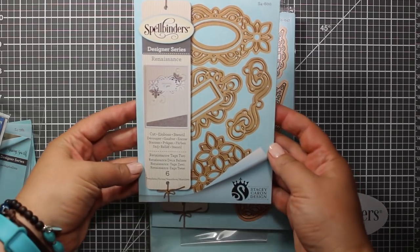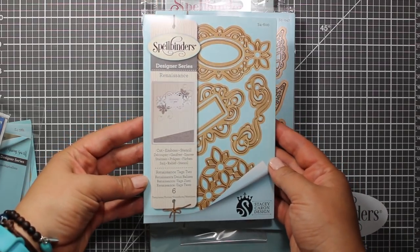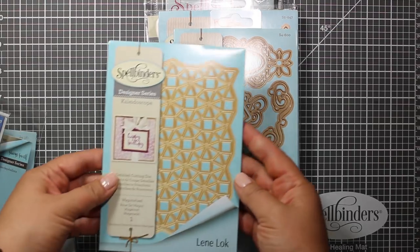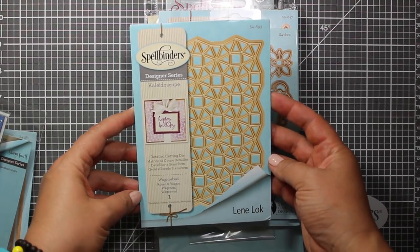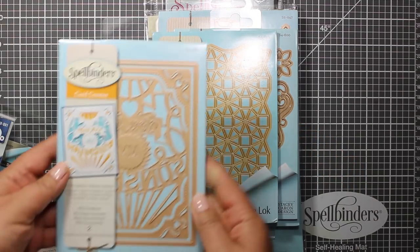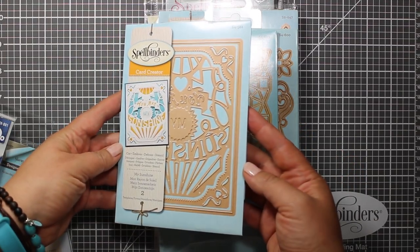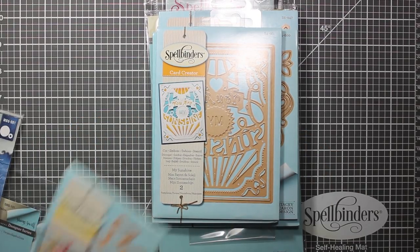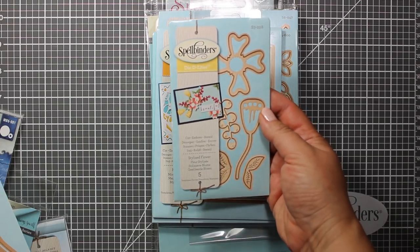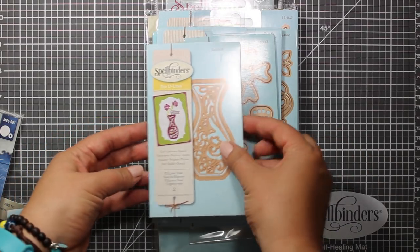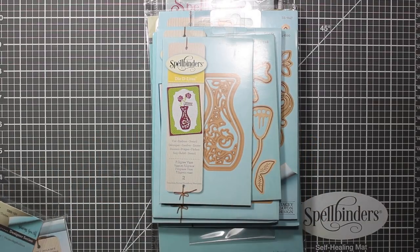The next one is Renaissance Tags 2. That's a big set. This large background die is called Wagon Wheel. It measures 3 by 6 inches. The next one is My Sunshine and this one is 4 and a quarter by 5 and a half. Now there are also two smaller sets. One of them is Stylized Flower and another one is Filigree Vase.